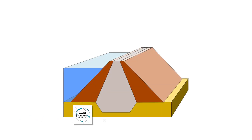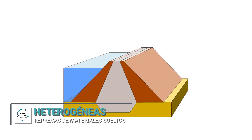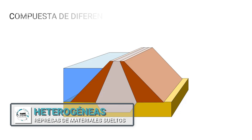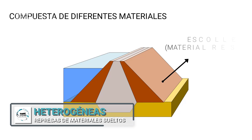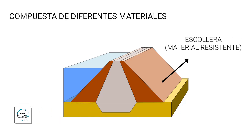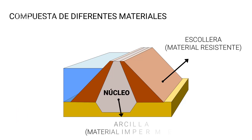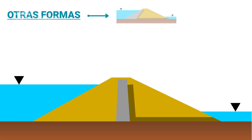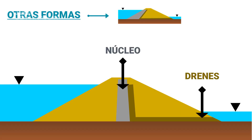Represas heterogéneas o de núcleo (Heterogeneous or core dams) — unlike homogeneous dams, they use different materials. On one hand, they have a resistant material, normally rockfill, but due to its permeability, another material is required to provide a waterproofing function — generally clays. This latter element is called the núcleo (core) and is usually located in the central part of the dam body, and can be vertical or inclined.